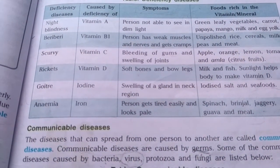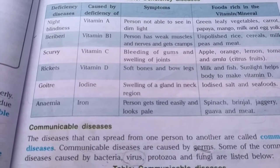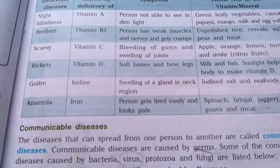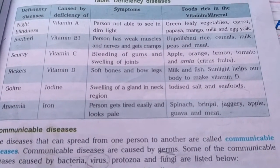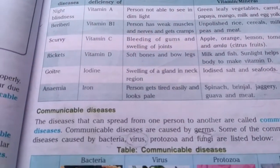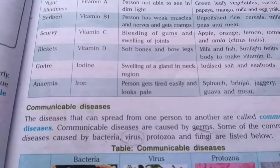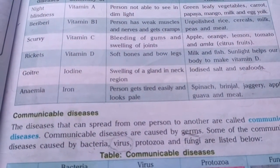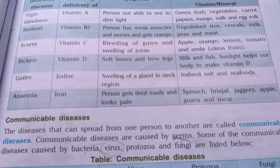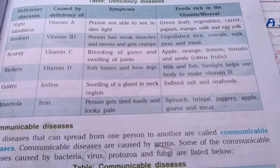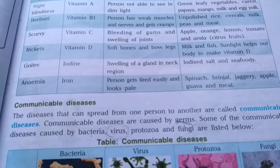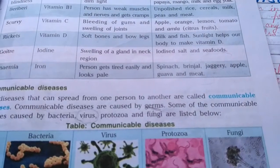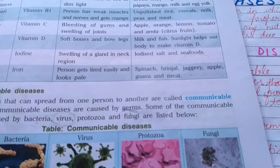Rickets is caused by deficiency of vitamin D; soft bones and bow legs are the symptoms. Milk, fish, and natural sunlight help our body make vitamin D. Goiter is caused by deficiency of iodine — there is swelling of a gland in the neck region; it can be cured by consuming iodized salt and seafoods. Anemia is caused by deficiency of iron; the person gets tired easily and looks pale — spinach, brinjal, jaggery, apple, guava, and meat should be consumed.